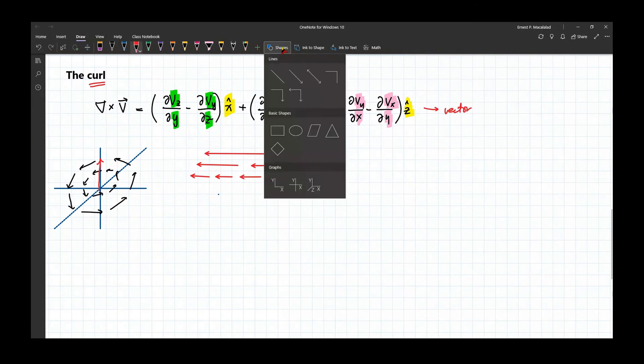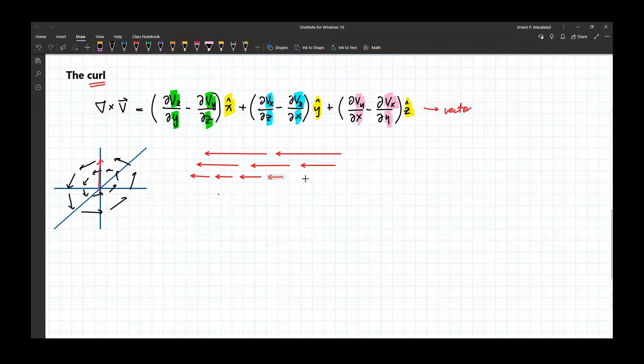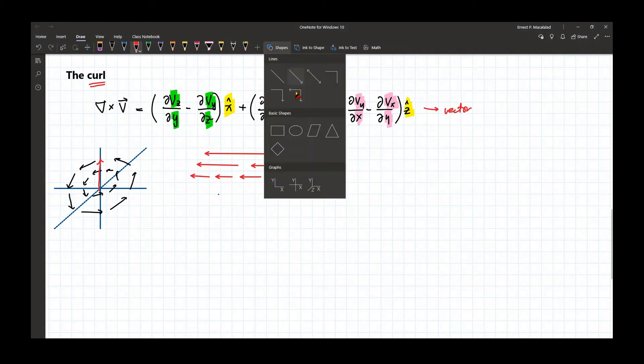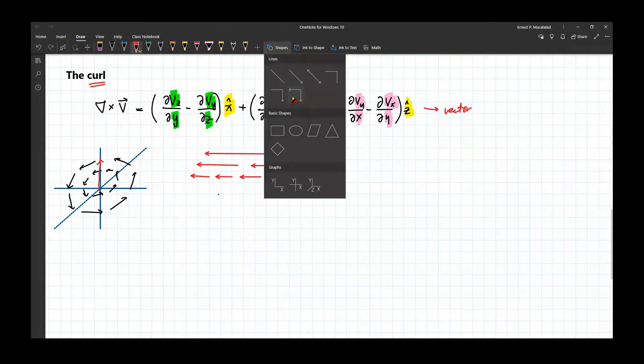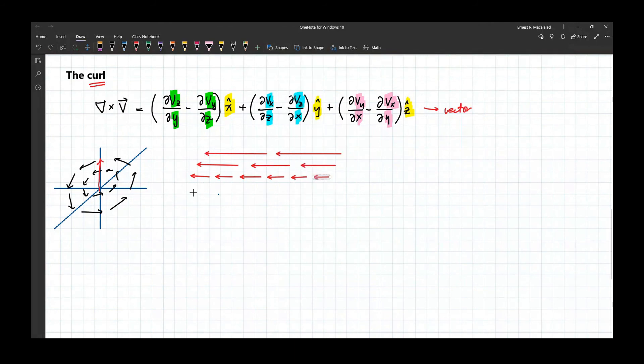So imagine we have a stream that has a differential magnitude. So you see differential magnitude at each point, while the direction is the same, there is a differences in magnitude. Like this.